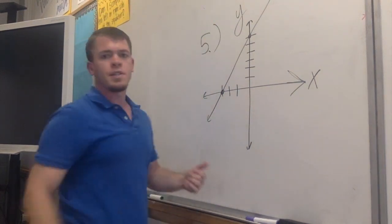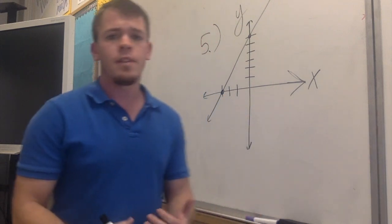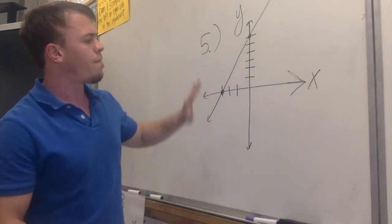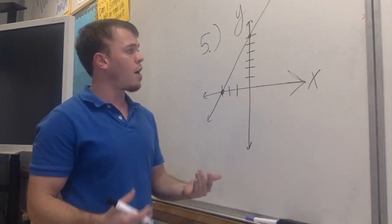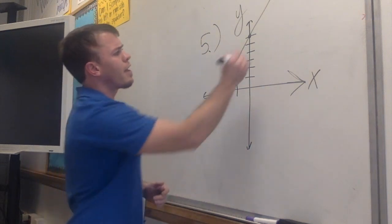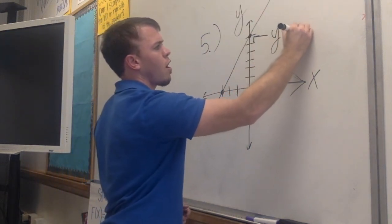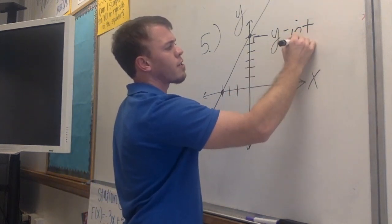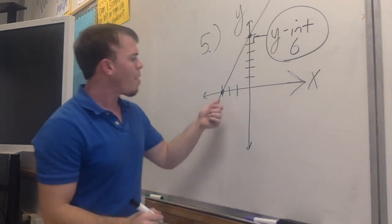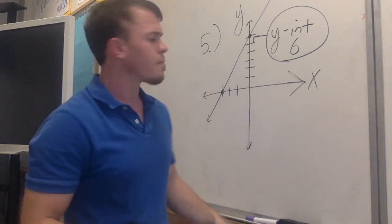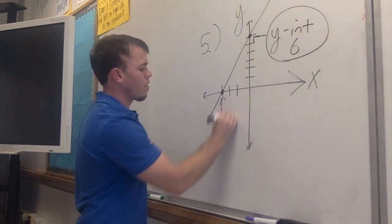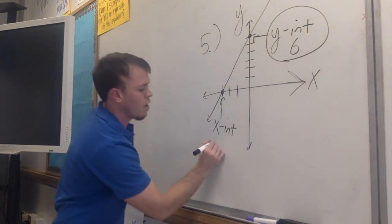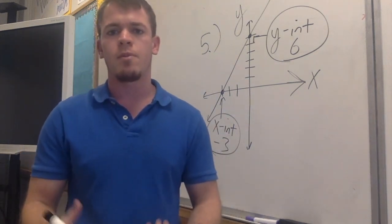Right here I have problem number five of the last five problems that you did, so we can check your final answer. Let's ask ourselves first, what's the y-intercept of this graph? We know our y-intercept is where our line crosses the y-axis, and counting up: one, two, three, four, five, six — if you got that your y-intercept was six, that is correct. Right here we're crossing the x-axis, making it our x-intercept. Counting to the left: one, two, three — we went to the left, so it's negative three. If you got negative three for the x-intercept, that is correct.